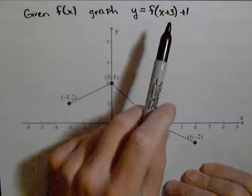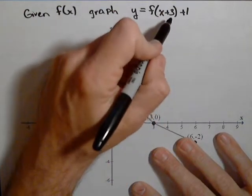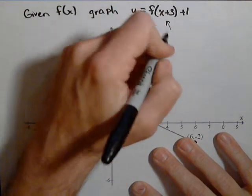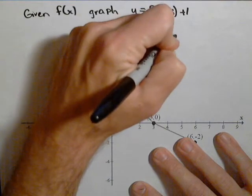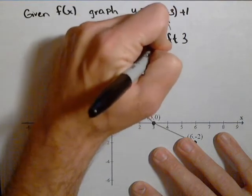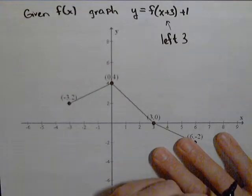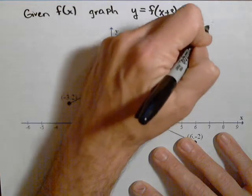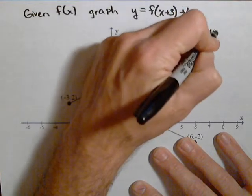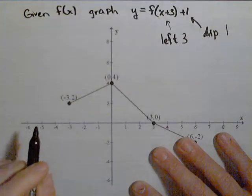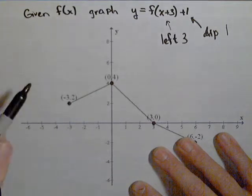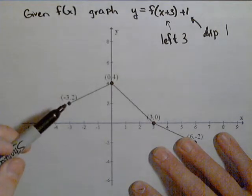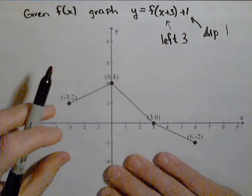We need to remember what each of these transformations are. This is going to make our graph go left 3 units, which changes the x values. It's going to move them all left 3 units. This one at the end is going to make our graph go up 1 unit, so that's going to add 1 to all our y values. What we're going to do is move our points first, then redraw our graph.